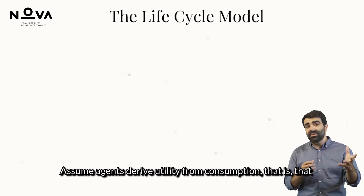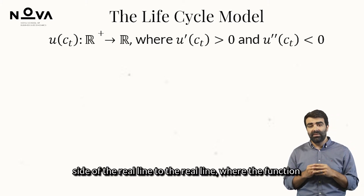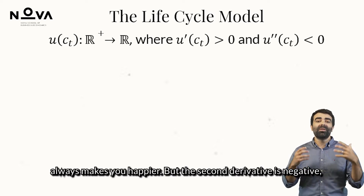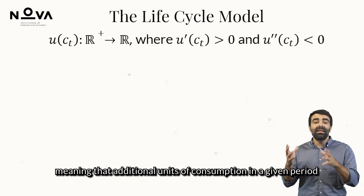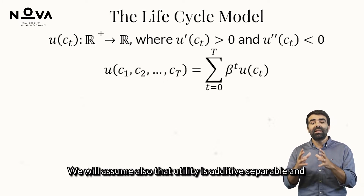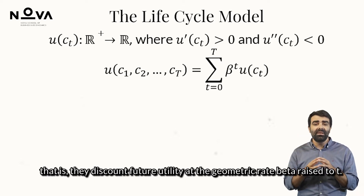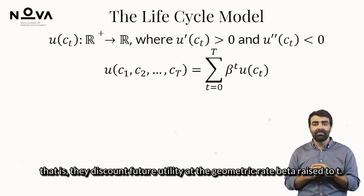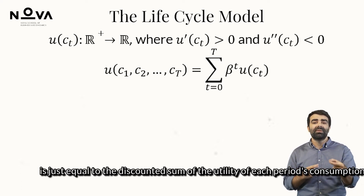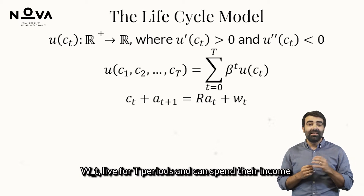Assume agents derive utility from consumption — that is, there exists a function u of consumption that maps the positive real line to the real line, where the function is twice continuously differentiable. The first derivative is positive, meaning more consumption always makes you happier. But the second derivative is negative, meaning that additional units of consumption in a given period will have decreasing returns. We also assume utility is additive separable, and that agents have some degree of impatience — they discount future utility at the geometric rate beta raised to t. This means that lifetime utility is just equal to the discounted sum of the utility of each period's consumption. Assume also that agents are endowed each period with income, live for T periods, and can spend their income on consumption or saving for the next period.